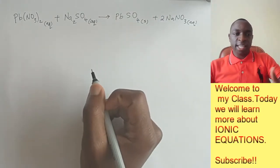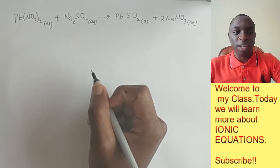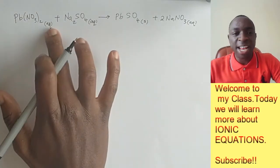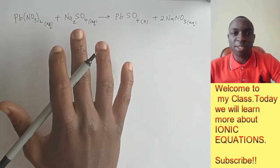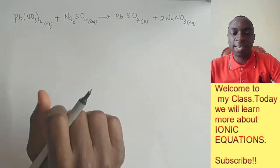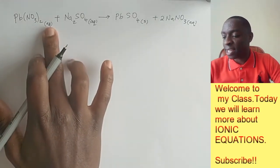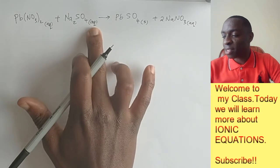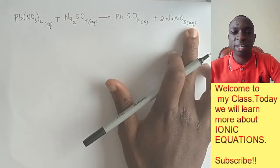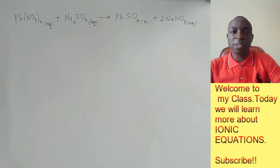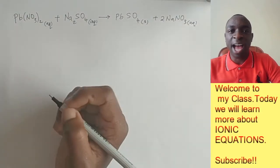Now, the next thing that you need to do when you're writing ionic equations is to check out for any aqueous solutions. So if anything has a state symbol of aqueous like this lead nitrate, sodium sulfate, and sodium nitrate, these ones, they need to be split into their constituent ions.